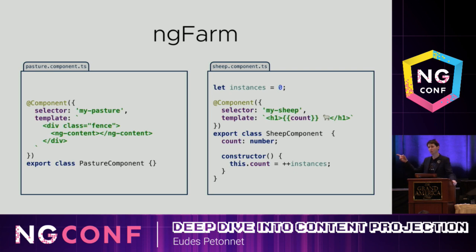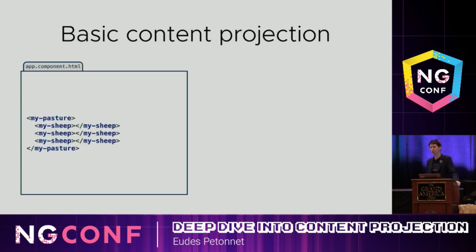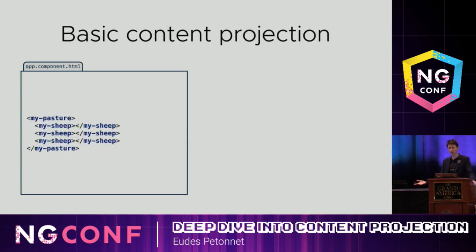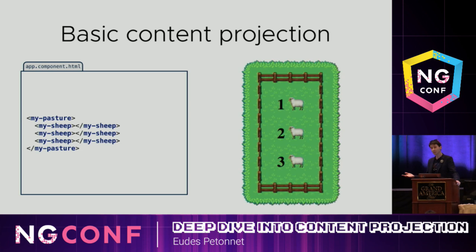This is an actual emoji in the code — you can do that, you can actually put emojis in the selectors, but for everyone's sanity I decided to go with a more traditional one for this talk. So let's just see it in action. I have my pasture, I put three sheep inside of it, and what I get is my three sheep counting one, two, three inside of the fence.